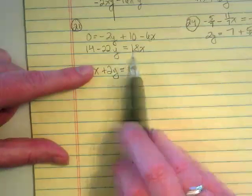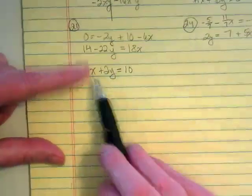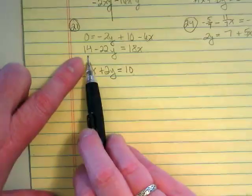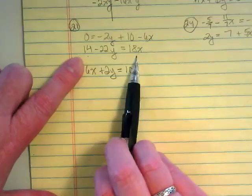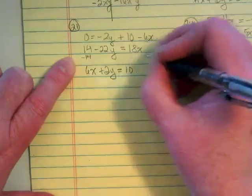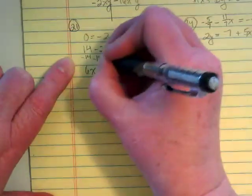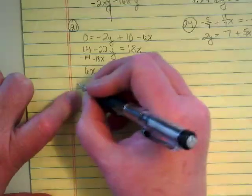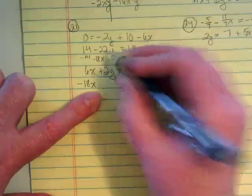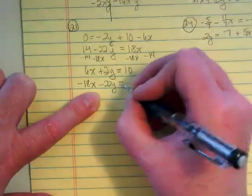Now we want to get this equation into that same setup where it's ax plus by equals c. This is in the wrong place, and this is in the wrong place. So we're going to subtract the 14 from both sides, and we're going to subtract an 18x from both sides. And we're going to put them all into the right place.